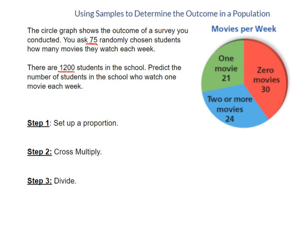So the first thing we're going to do to help us is to set up a proportion. Remember this question is asking about watching one movie each week. So I'm just going to focus on the portion that talks about one movie. One movie a week is 21 people out of the 75 people I have surveyed.